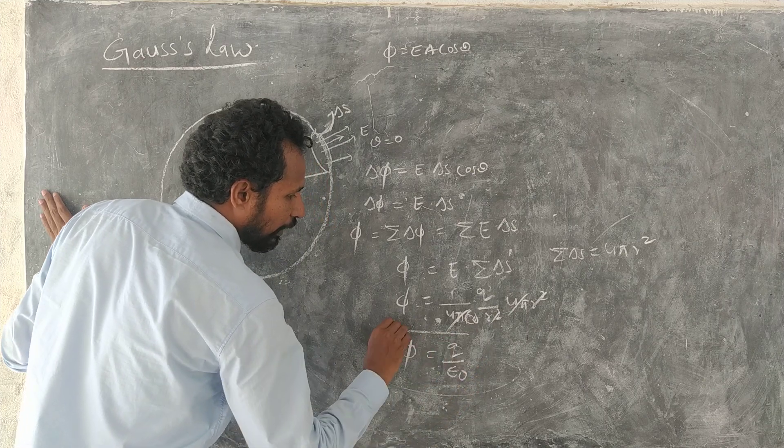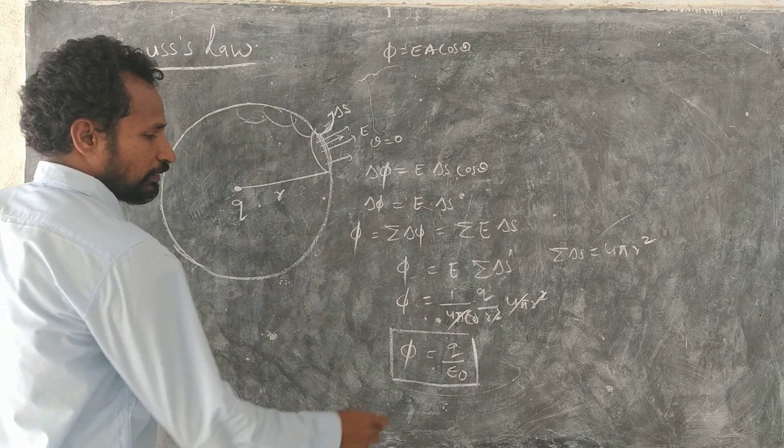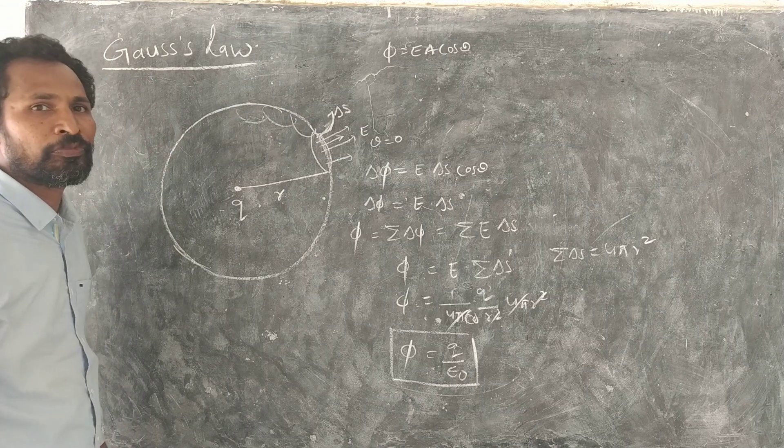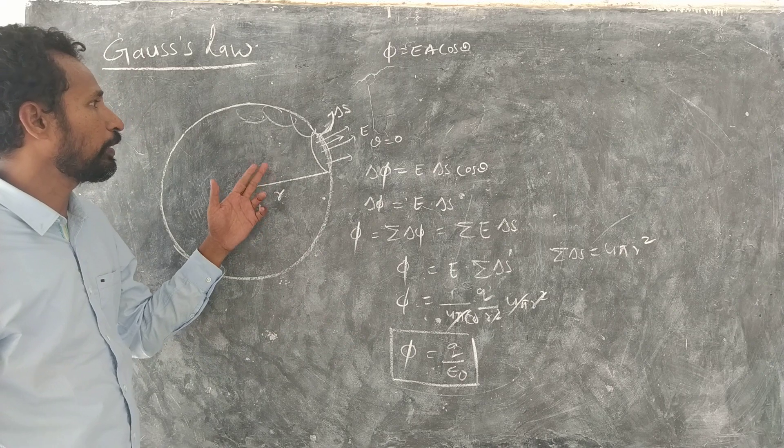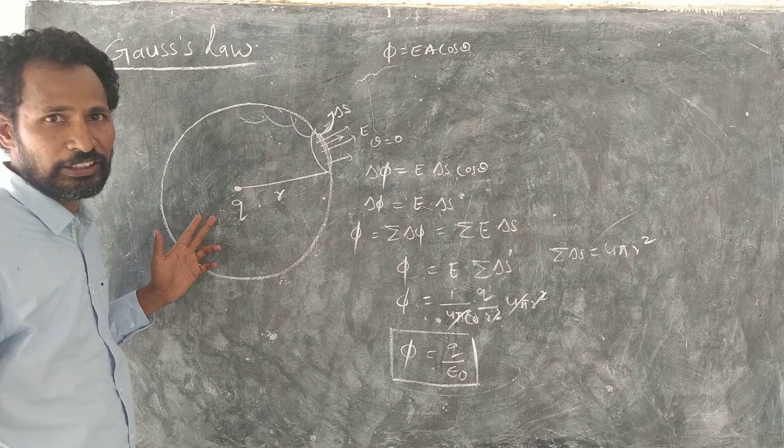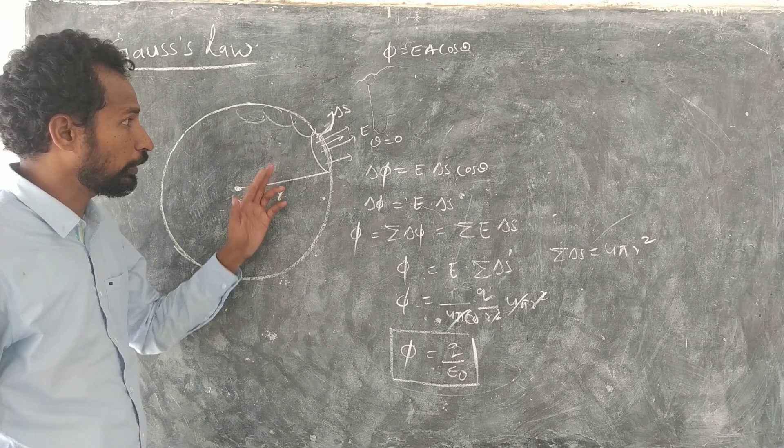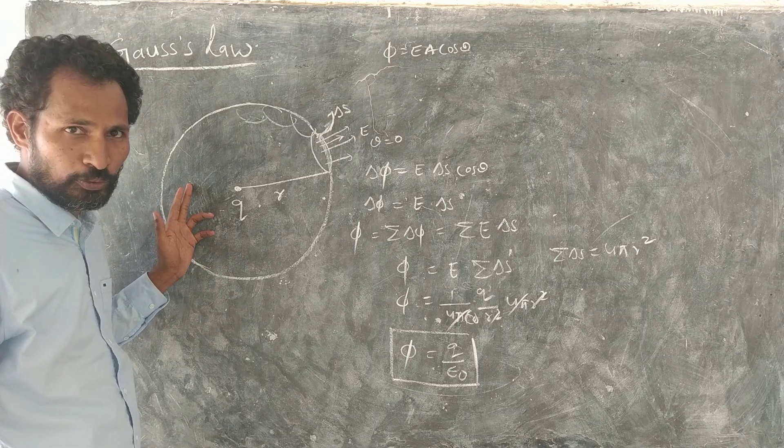This is the Gauss expression. Then how do we define Gauss's law? Gauss's law is flux through any closed surface is equal to,